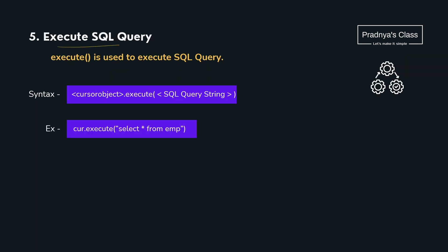Moving ahead to the next step — we need to execute the SQL query. Now that the connection between Python and MySQL is created, it's time to write the query and execute it. For that we will use the execute() function. Note that the execute() function works with the cursor object created in the previous step, and the parameter for this function will be a complete query.